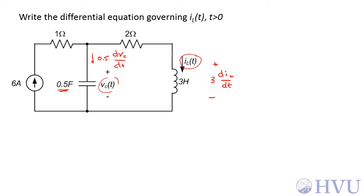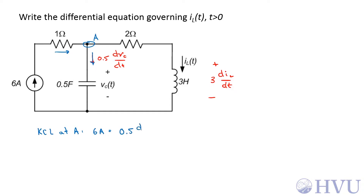Now I just need to do KVL, KCL, and Ohm's Law. Let me call this node A and do KCL at node A. I have 6 amps going into that node, so the currents into the node have to equal the sum of the currents leaving the node. The current through the capacitor is 0.5 dVc by dt, and the current through the 2 ohm resistor is going to be I sub L of t.